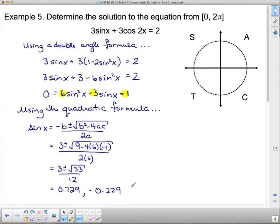Now, what do we do with that? Well, I know that sin(x) = 0.729. And I know that sine is positive in quadrant 1 and quadrant 2. So I know that I have an angle here and an angle here that are going to have a sine of 0.729.